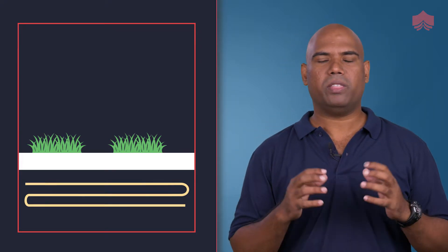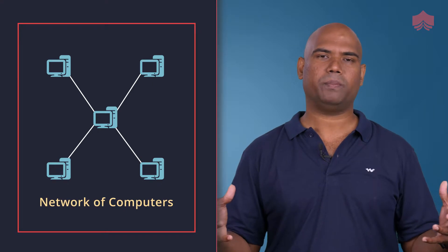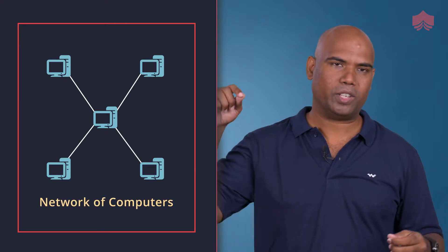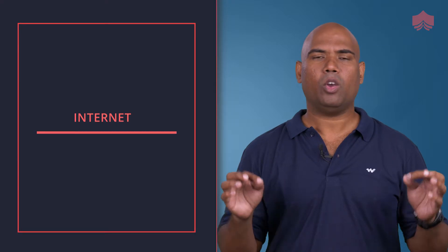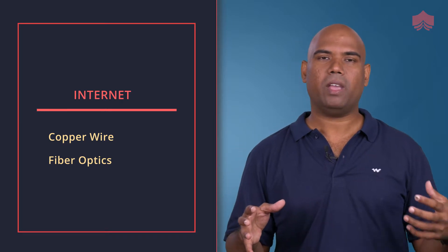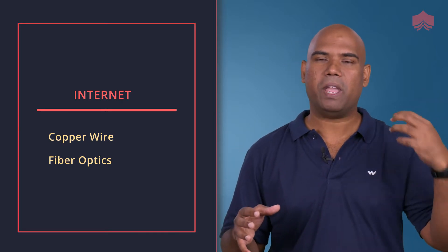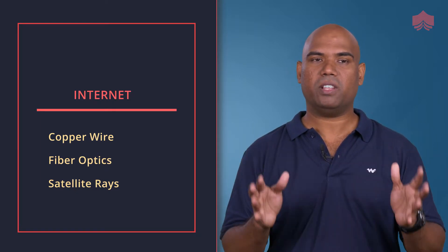Think of the internet as one really long wire that's buried underneath the ground, right underneath your feet. This wire transmits data. The internet is basically a network of computers, all networked through this one wire. That wire could be copper wire, fiber optics, or sometimes a beam through a satellite — these are all different ways we connect to the internet.